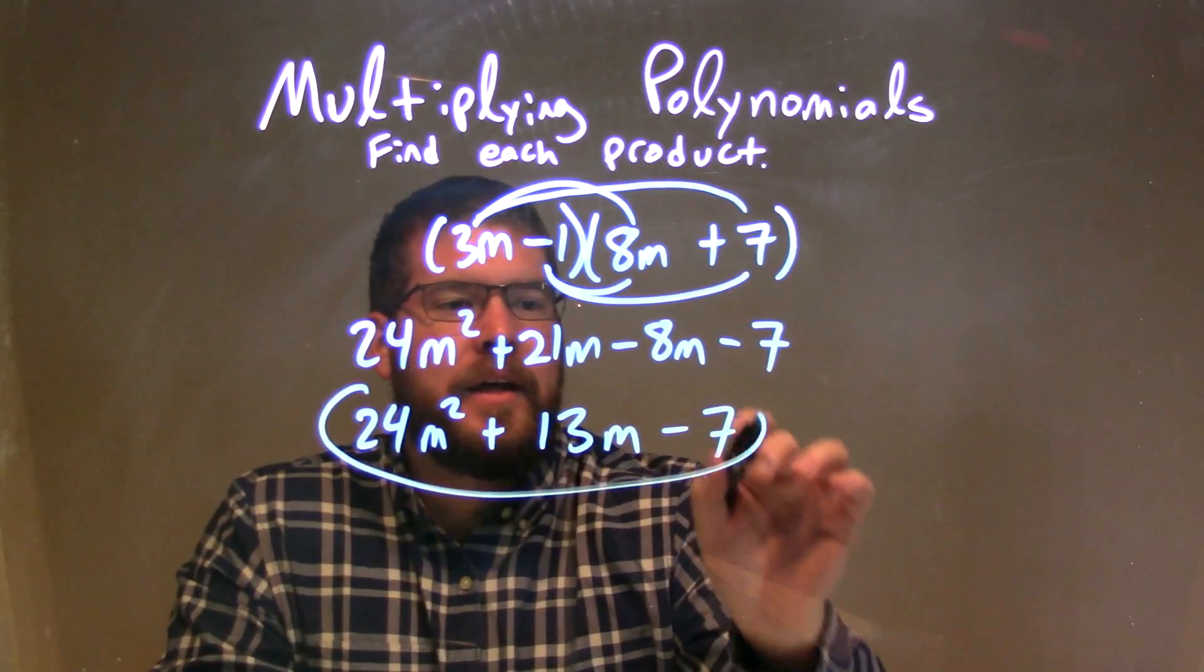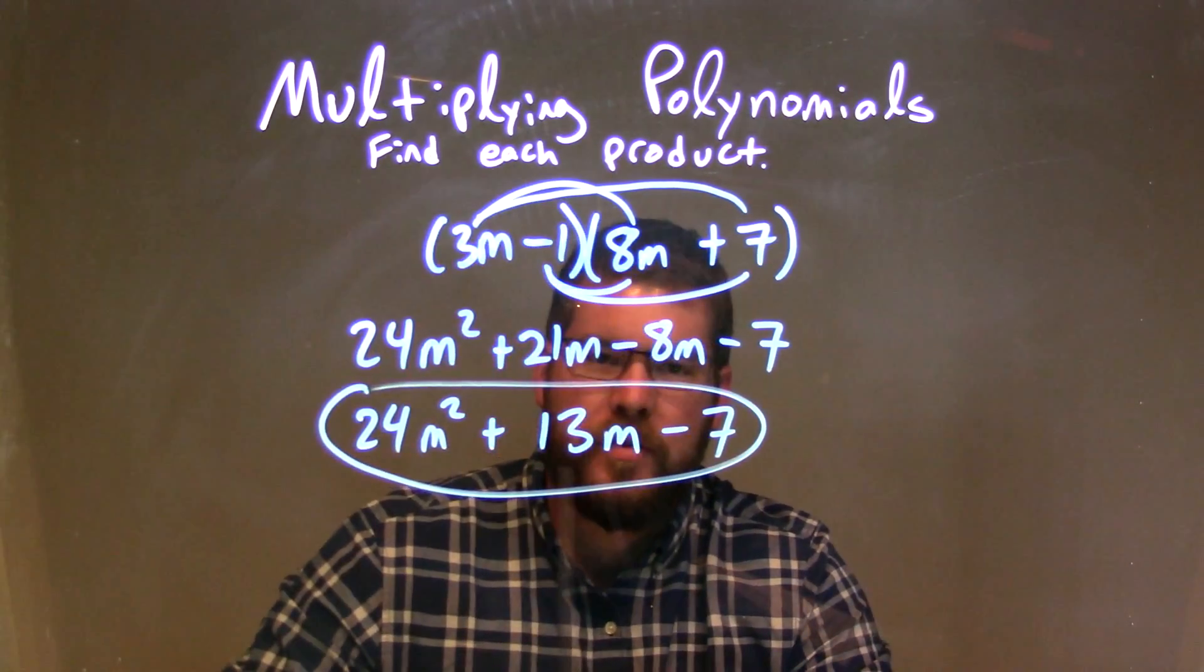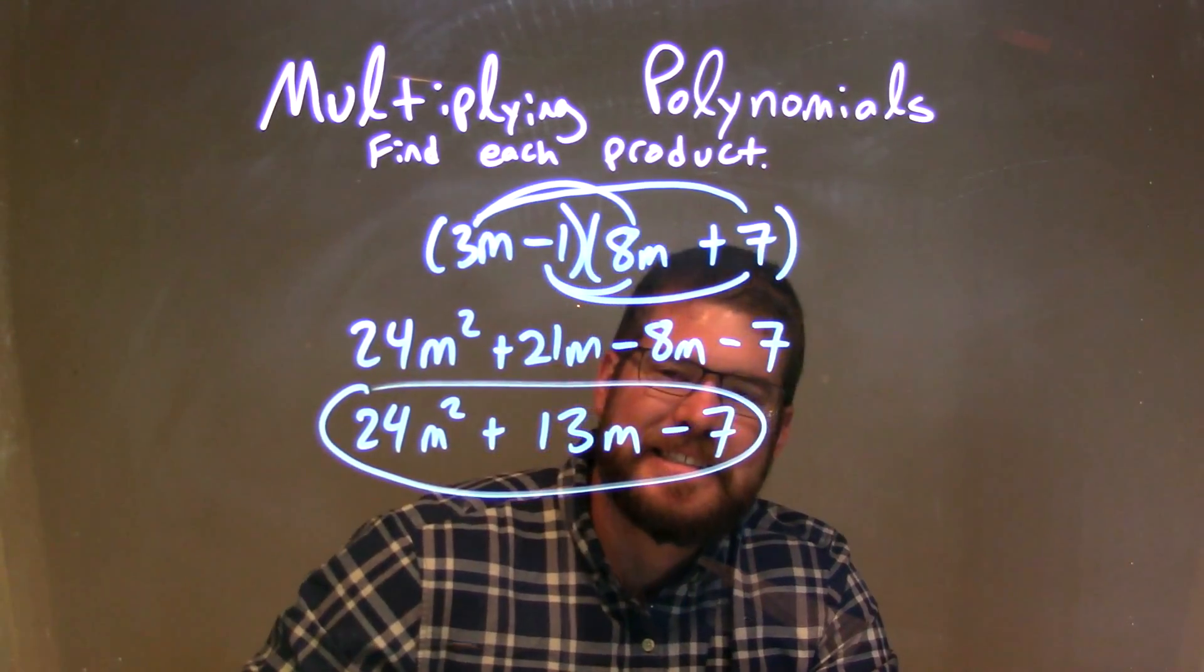And there we have it. Our final answer of 24m squared plus 13m minus 7.